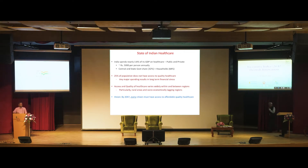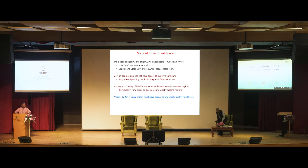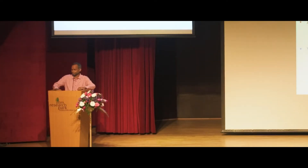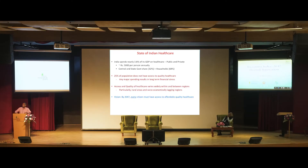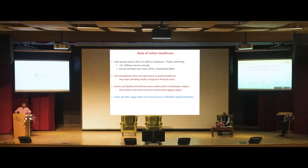How do we define affordable? About four thousand to five thousand rupees annually per person is what the country spends — from public and private sources combined. If you were to define affordability at constant prices today, at least 60 percent of the people are getting this form of healthcare. So this number is important.